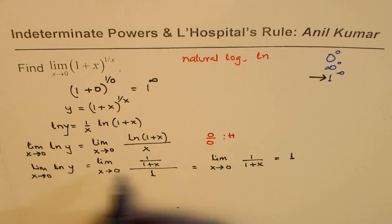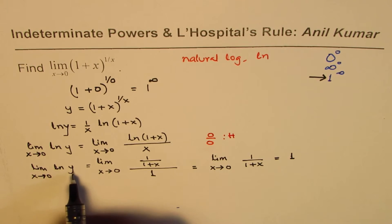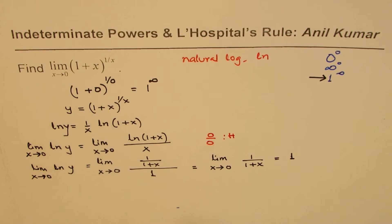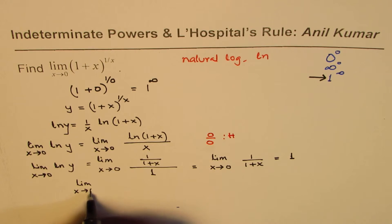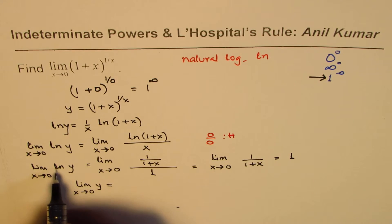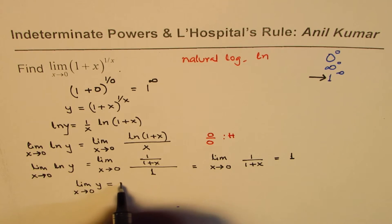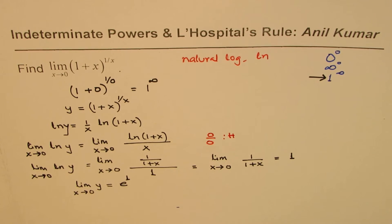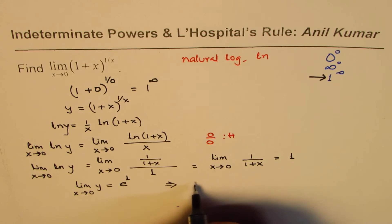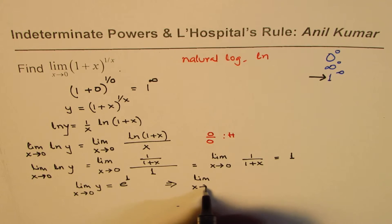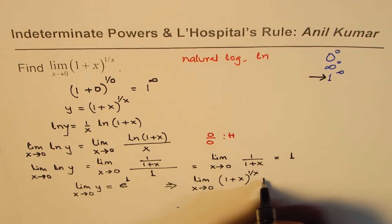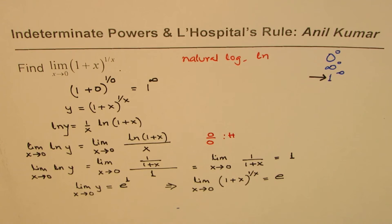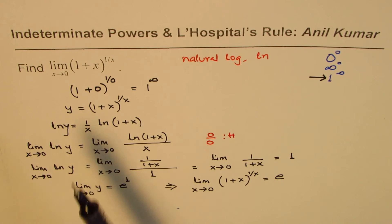Since the limit of ln y is one, and y was defined as the function (1 + x) to the power of one over x, then ln y equals one means y equals e to the power of one. So we get our result: the limit as x approaches zero of (1 + x) to the power of one over x equals e.